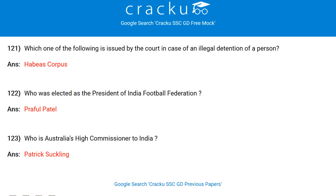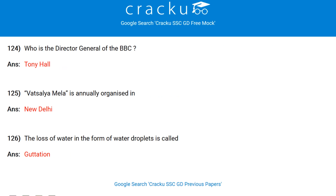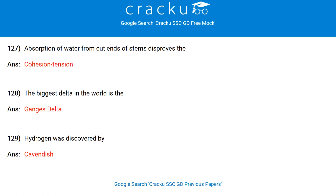Who is Australia's High Commissioner to India? Patrick Suckling. Who is the Director General of the BBC? Tony Hall. Vatsalya Mela is annually organized in New Delhi. The loss of water in the form of water droplets is called guttation. Absorption of water from cut ends of stems disapproves the cohesion-tension theory. The biggest delta in the world is the Ganges delta. Hydrogen was discovered by Cavendish.